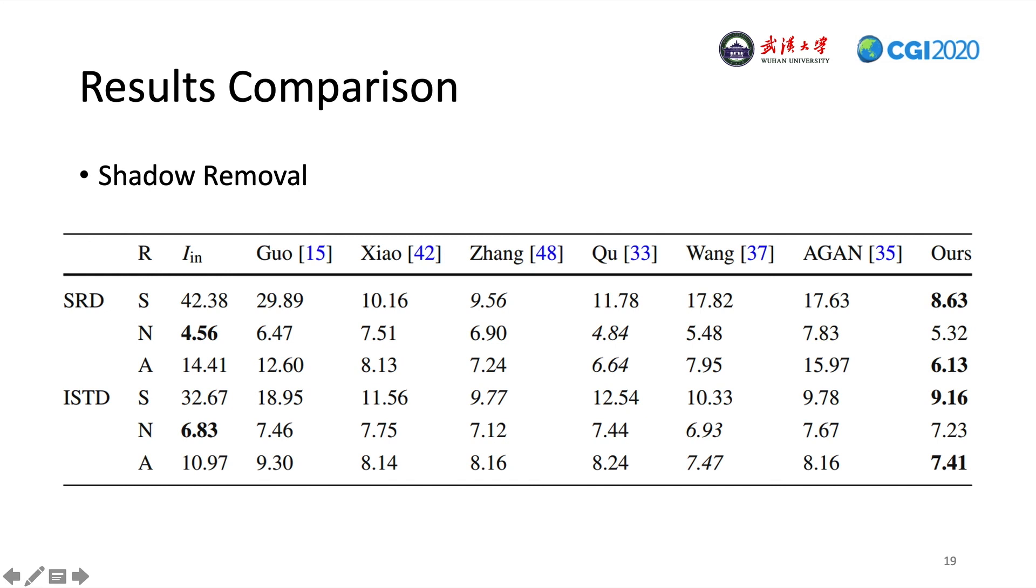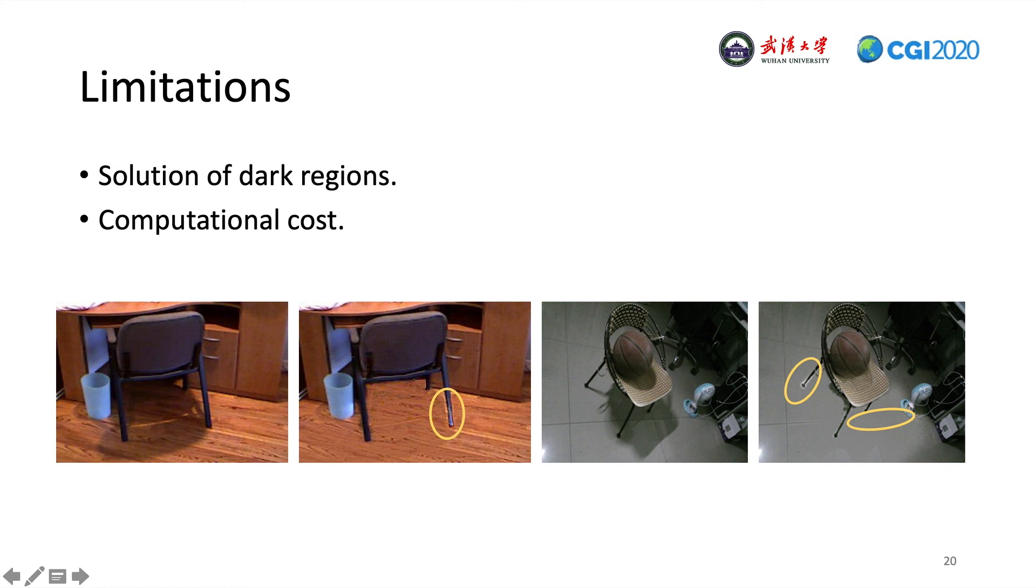However, our method also has some limitations. One limitation is in the solution of dark regions, such as the chair and dark texture of the floor. They will be mistakenly detected as shadow regions. In this case, when we perform shadow removal on these regions, it will achieve unsatisfactory results, as shown below. In addition, computational cost is currently a bottleneck to our algorithm.